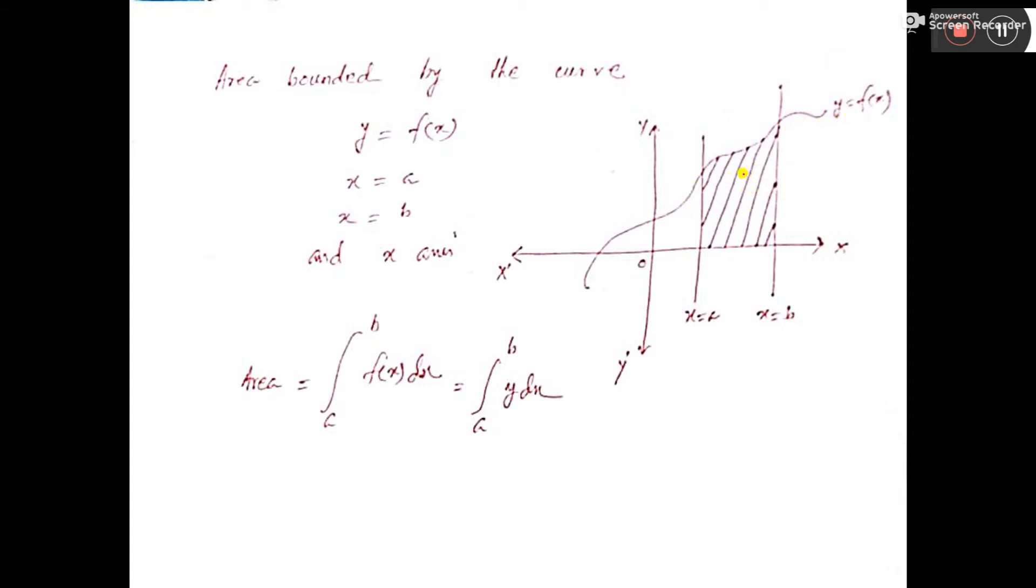This is the worst kind of curve, it can be any kind. This is one line parallel to y-axis, x equal to a. Another line parallel to y-axis, that is x equal to b.